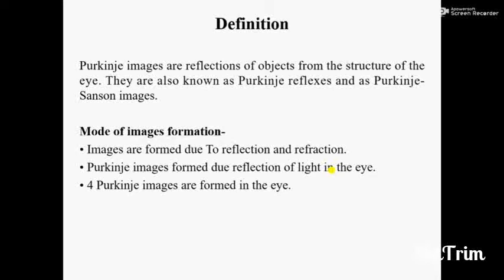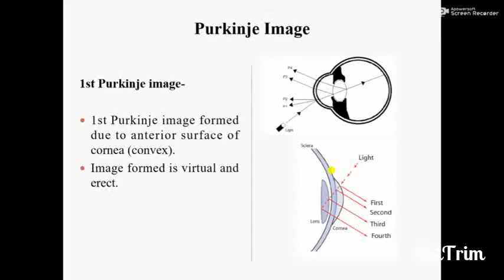We have 4 Purkinje Images formed in the eye. The 1st Purkinje Image is formed due to the anterior surface of the cornea. The anterior surface of the cornea is convex — because the shape of the cornea is convex. Because of this convex shape, the image formed is virtual and erect.